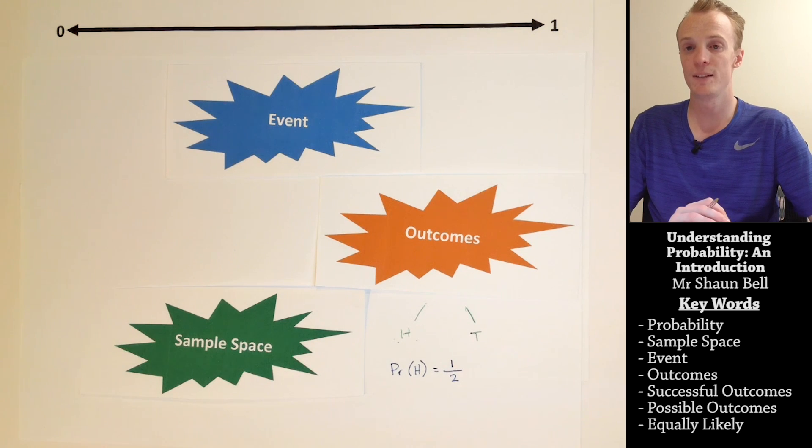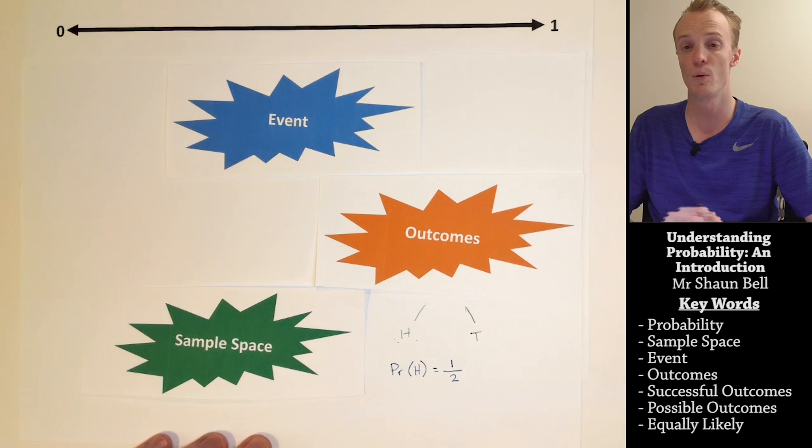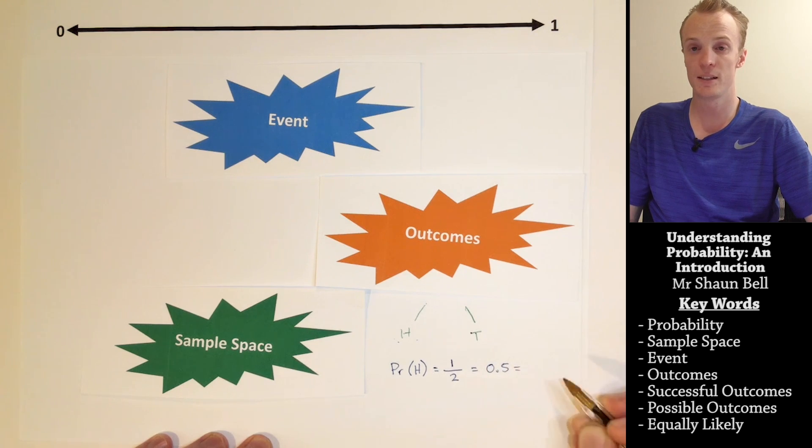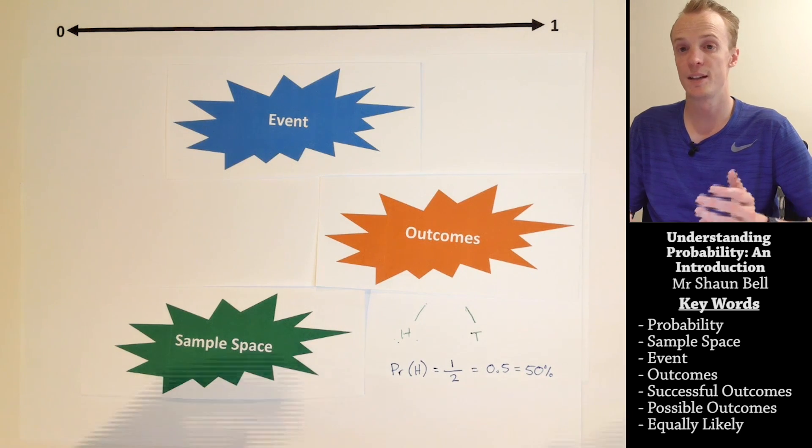We've now represented what the probability of flipping a head is on a coin in fraction form. We can also represent this as a decimal, which would be 0.5, or as a percentage, which would be 50%. All of these values are the same.